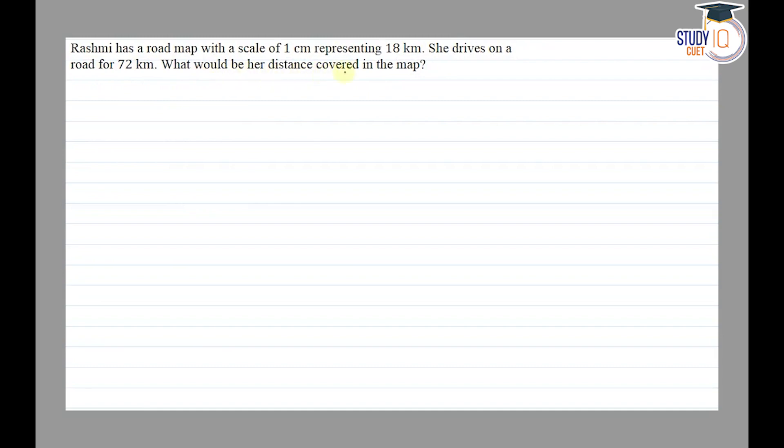What would be her distance covered in the map? So we have given actual distance and distance covered in map. Here we have in km and here we have in cm. So we have given 18 km represented by 1 cm, and we need to find out for 72 km.